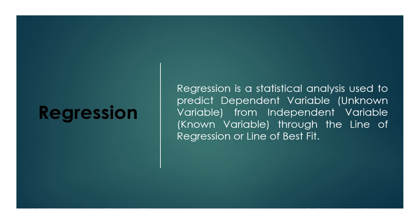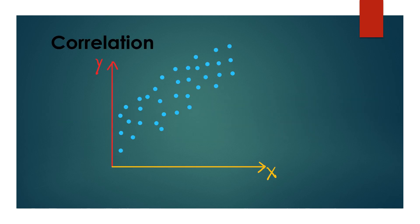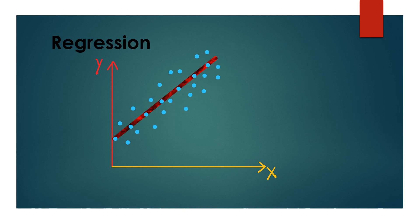Regression is a statistical analysis used to predict a dependent variable, which is an unknown variable, from any given value of an independent variable, which is a known variable, through the line of regression or line of best fit. In correlation, scatter points tell us how two variables are related — it tells the direction and strength of the relationship. But in regression, we actually use this line on the graph to make predictions about the unknown variables. This red line is called the line of regression or line of best fit.